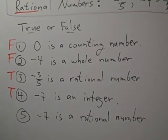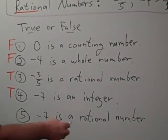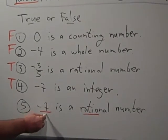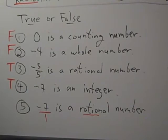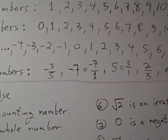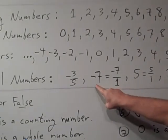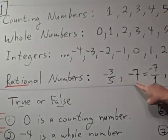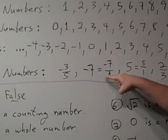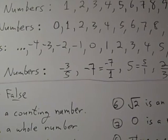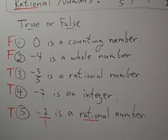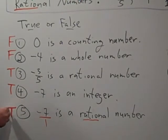In number 5, it says negative 7 is a rational number. It doesn't look like a ratio of two numbers, but we could write negative 7 as negative 7 divided by 1. Negative 7 divided by 1 is the ratio of two integers, so that is a rational number. It is listed as one of the example rational numbers — negative 7 equals negative 7 divided by 1, so it can be written as a ratio. Number 5 is true.